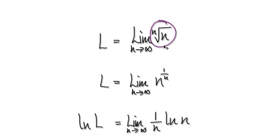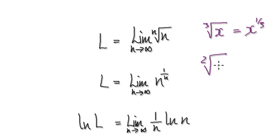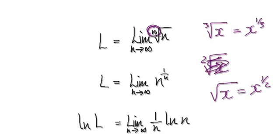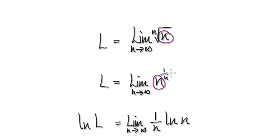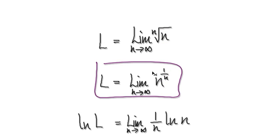So from here, visualize this thing as n to the power, remember, if you have cube root of x, that's the same as x to the power of a third. If you have square root of x, that's the same as x to the power of a half. So if you have to the root n, then you can imagine it as being n to the power of 1 over n.